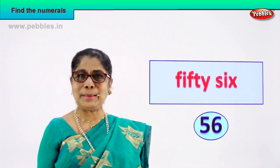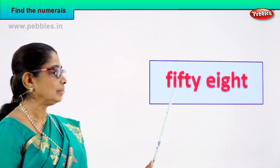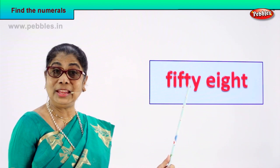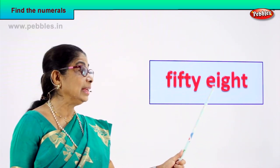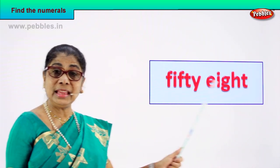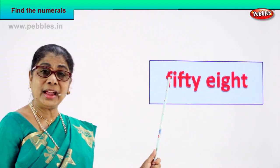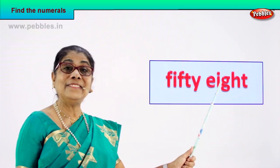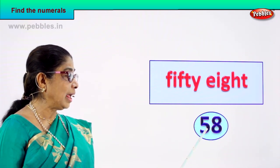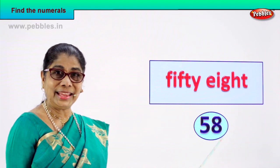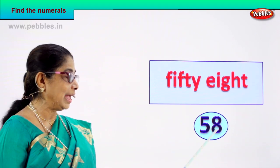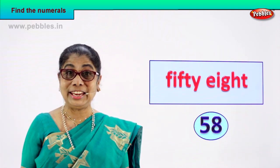Shall we take the next number name? Spell it: F-I-F-T-Y, 50. E-I-G-H-T, 8. 58! How do you write 5 and 8? 58. What is this? 58. 5 and 8 — 58. Good!